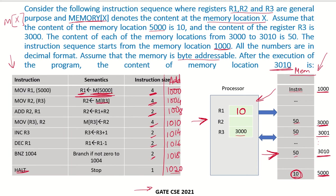The second instruction says the content of the memory location whose address is in R3 should be brought into R2. R3 is holding address 3000, and M[3000] = 50, so R2 now has 50. Next, ADD R1 + R2 → R2: 50 + 10 = 60. So R2 is now 60.